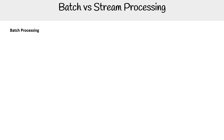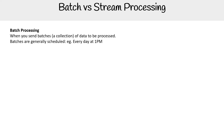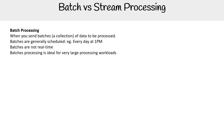Let's compare batch and stream processing. Batch processing is when you send batches — a collection of data — to be processed. Batches are generally scheduled; you might say every day at 1pm, but you could also just queue up a batch whenever you feel like it. Batches are not real time, meaning all the data is sent and then you wait until the batch is back to see the results. Batch processing is ideal for very large processing workloads and is generally more cost efficient than stream processing.